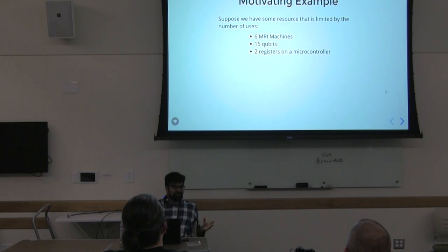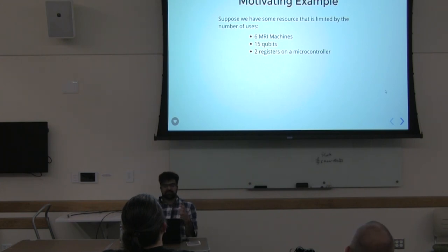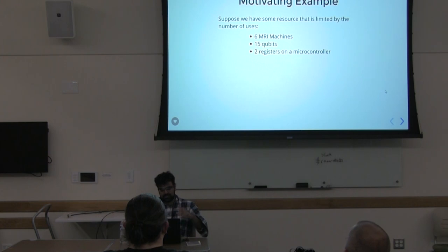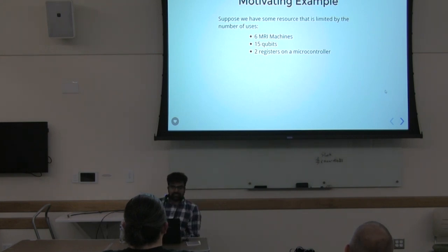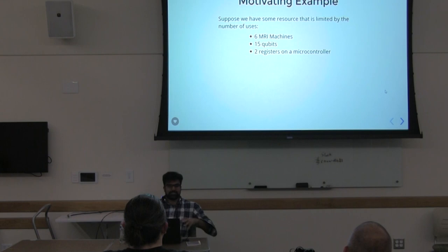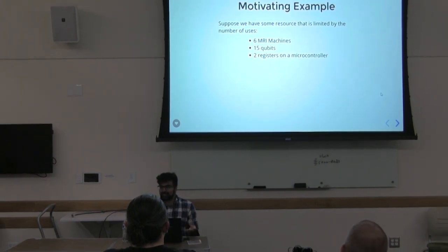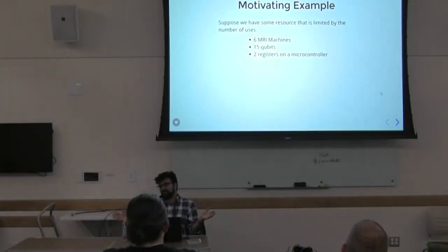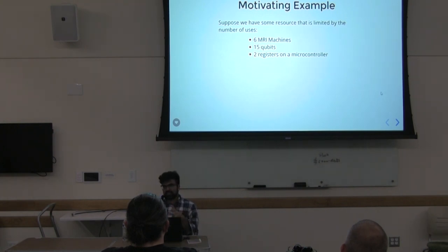That was the cache var example of a co-effect. Now for a bounded reuse example: suppose we have some resource external to our computer that is limited by the number of times we can use it. For instance, six MRI machines where using more causes too much radiation, a quantum computer with only 15 qubits available, or programming a microcontroller where an assembly program can only access two registers. We want to restrict at the type level usage to a fixed number of resources.